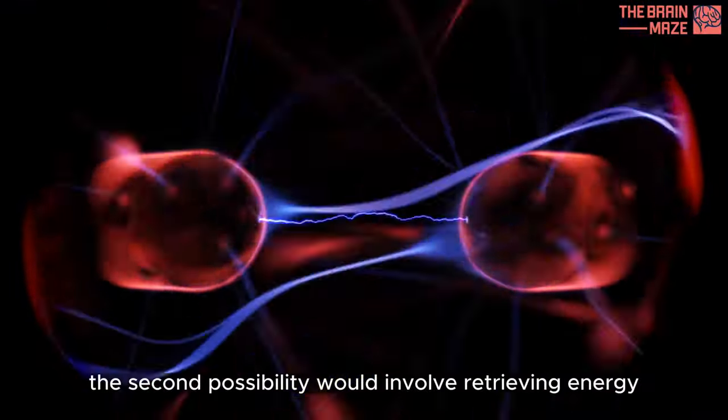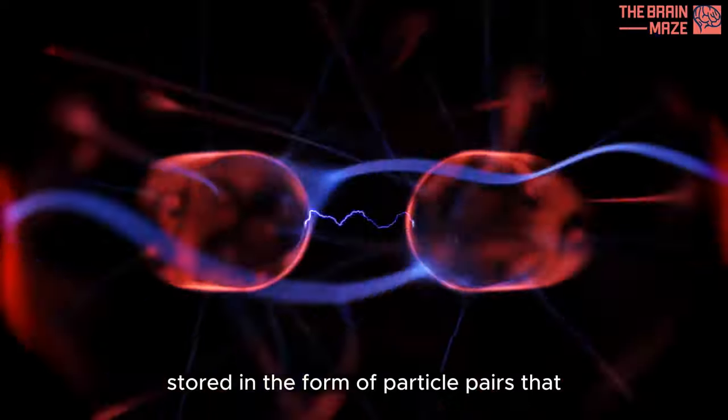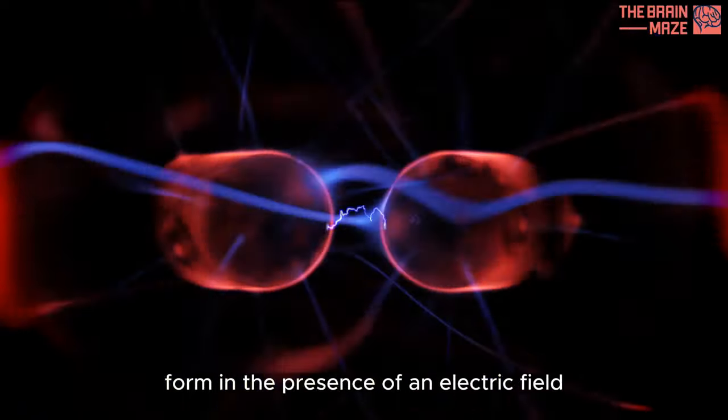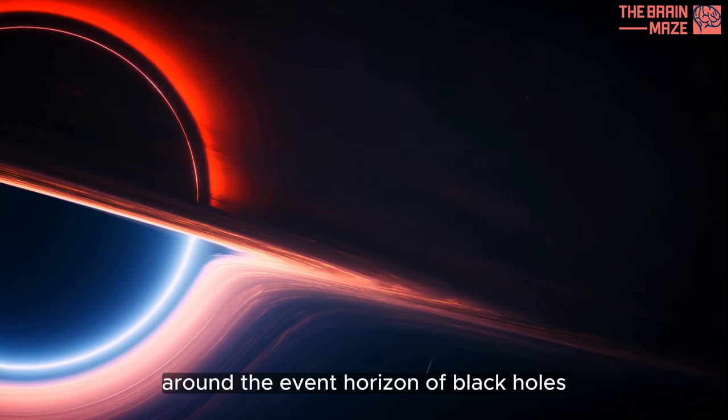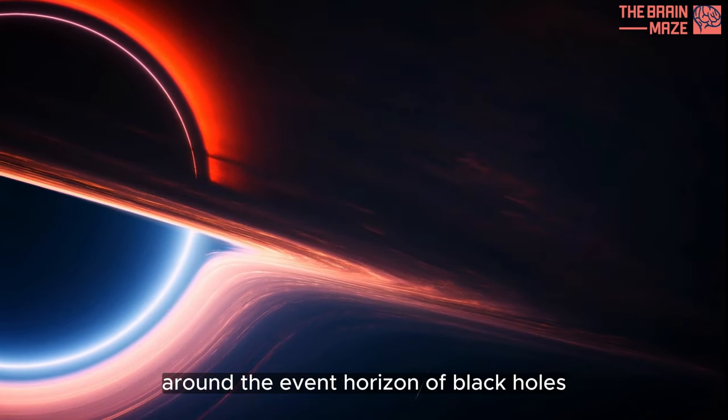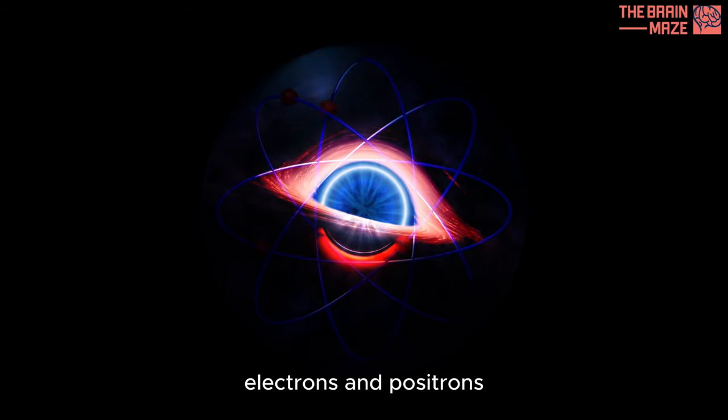The second possibility would involve retrieving energy stored in the form of particle pairs that form in the presence of an electric field. Prior research has shown that an electric field exists around the event horizon of black holes, some of which are strong enough to create both electrons and positrons.